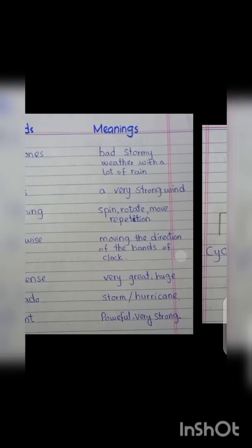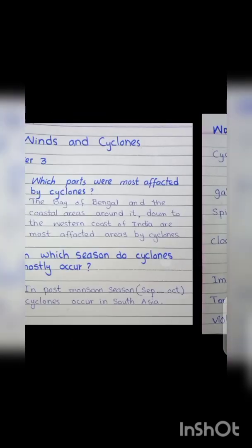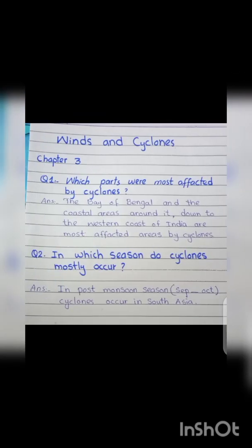Cyclones: bad stormy weather with a lot of rain. Gales: a very strong wind. Spinning/spin: rotate, move in repetition. Clockwise: moving in the direction of the hands of a clock. Immense: very great, huge. Tornado: a storm. Hurricane: violent, powerful, very strong. Students, let's start to read and write your question answers.